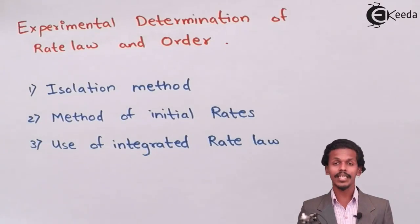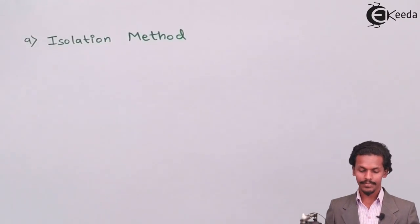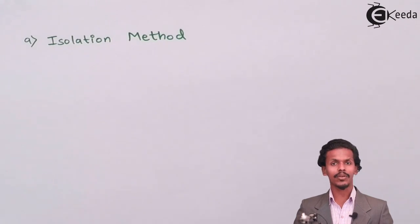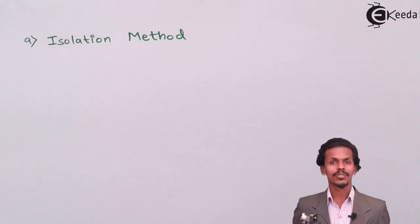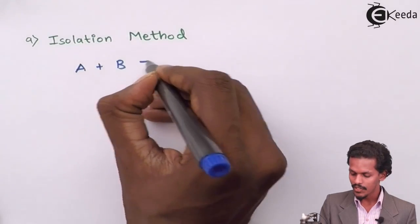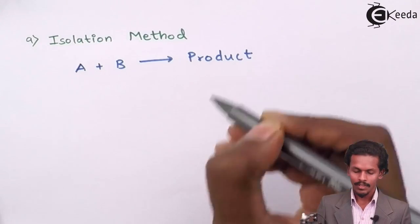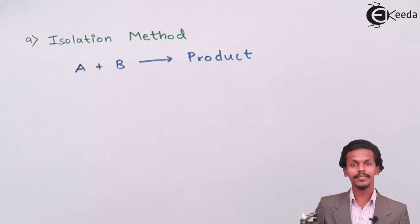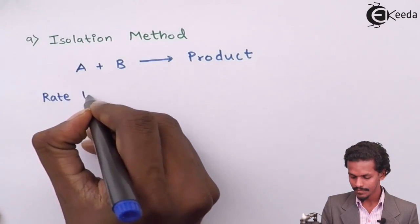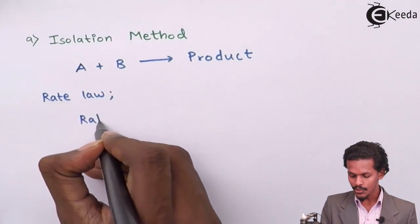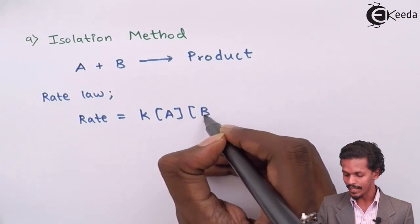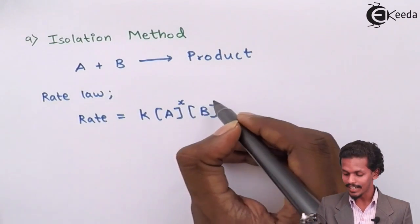Let us see these one by one, starting with the isolation method. It's a very simple process. For a reaction where reactants A and B give a product, according to the rate law we can write: rate equals rate constant K times concentration of A raised to X and concentration of B raised to Y, where X and Y are the experimental components.